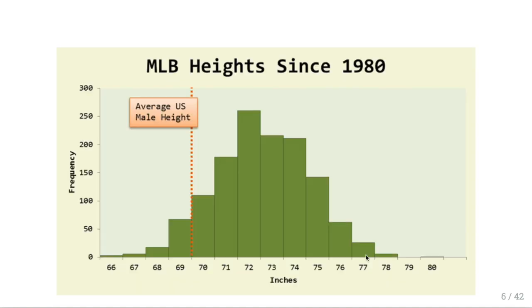In the real world, one pattern that pops up a lot is the normal curve — the symmetric curve shaped like a bell. Interestingly, even subpopulations often can have roughly normal distributions. For example, this shows the distribution for major league baseball players' heights since 1980. There's a pretty normal curve with the center somewhere between 72 and 74 inches, which is way above the average U.S. male height. So even though this is just a subpopulation, they still have a normal distribution, and this is something you see quite frequently.